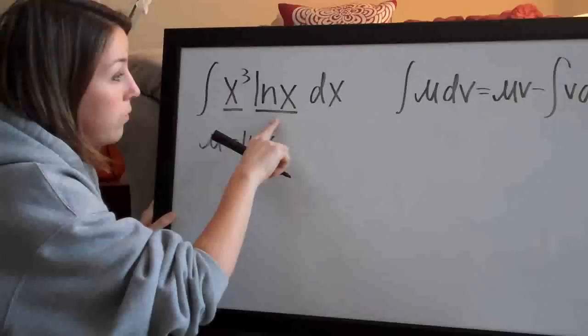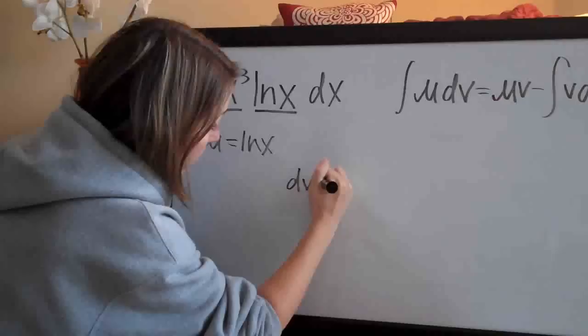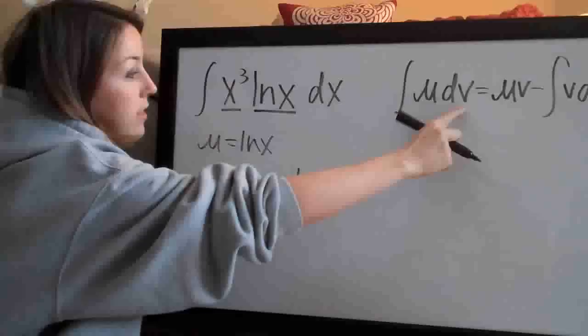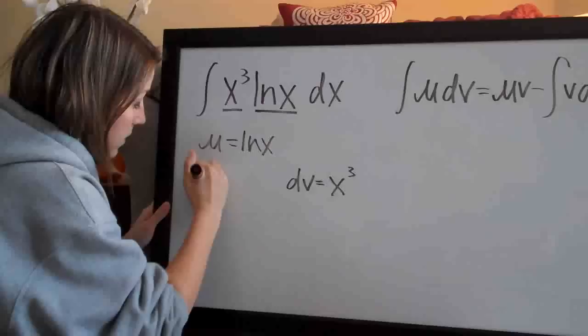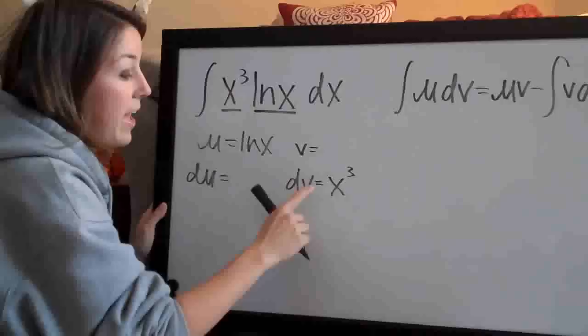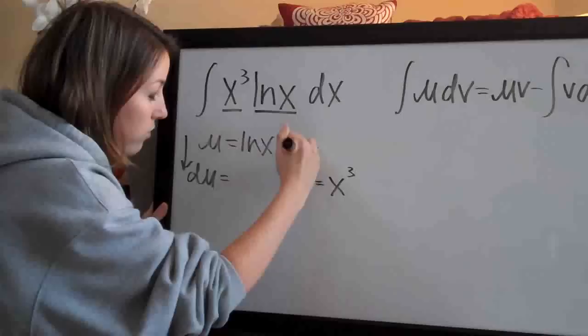Since natural log of x is u, the other part — x cubed — has to be dv. So u equals ln of x, and dv equals x cubed. You just assign these two values.